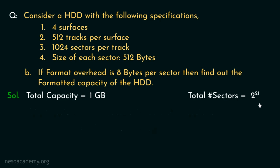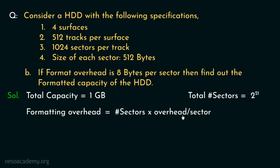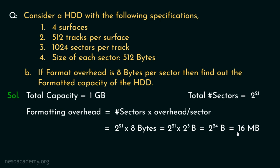Since we have the total number of sectors, let's calculate the formatting overhead. It can be found by multiplying the number of sectors by the format overhead per sector. Total sectors are 2²¹ multiplied by 8 bytes, which is 2²¹ × 2³ = 2²⁴ bytes. This can be stated as 2⁴ × 2²⁰, where 2⁴ is 16 and 2²⁰ is 1 megabyte. Hence the formatting overhead is 16 megabytes.